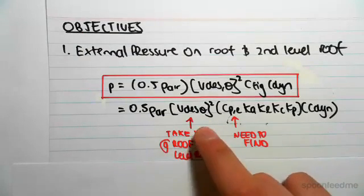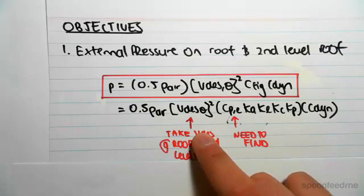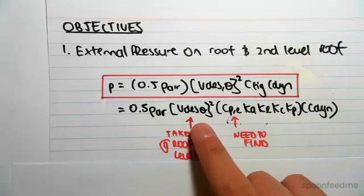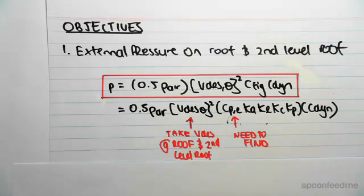Okay, so vdes is not going to be changing like before, like the windward wall or anything like that. We're just going to take the design wind speed at the second level roof and at the roof for each of those cases.